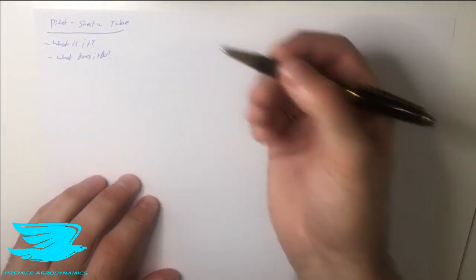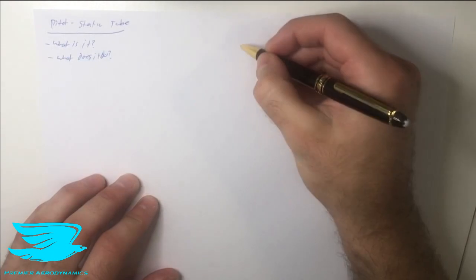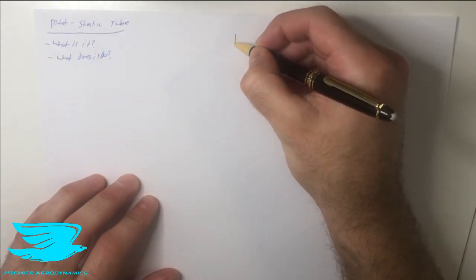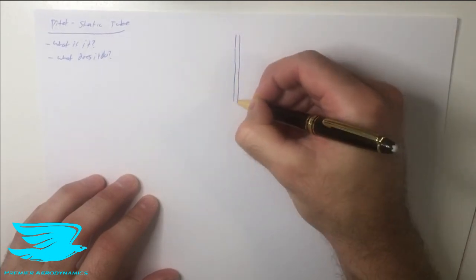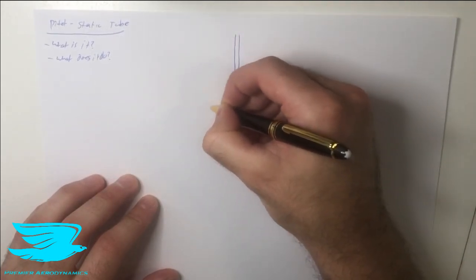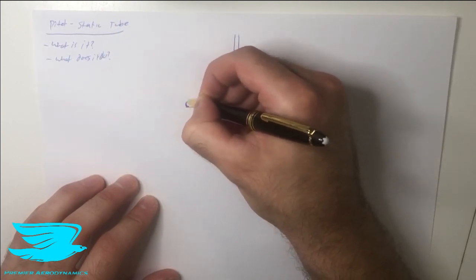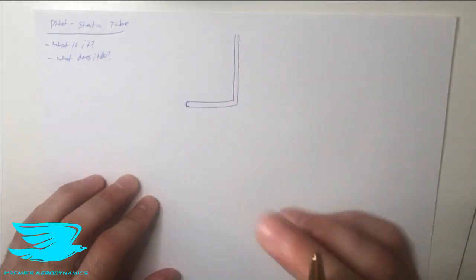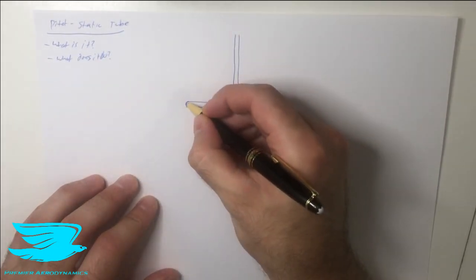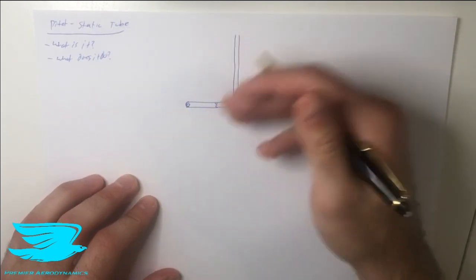So let's go through what it is first. It is a fairly simple instrument from the looks of it. We have a tube that comes straight down, and then at the bottom we have a right angle. It comes out to a point, and we have usually a curved surface — this is usually hemispherical. At the front we have a hole, and then a little bit further downstream we have holes around the side of the tube.